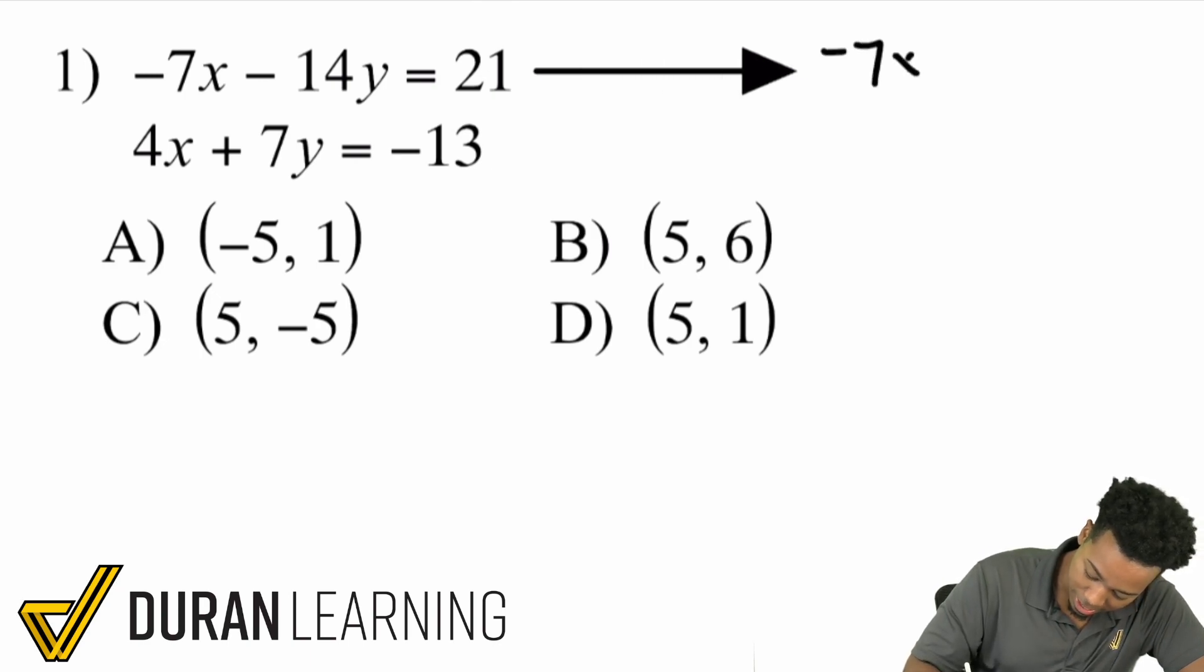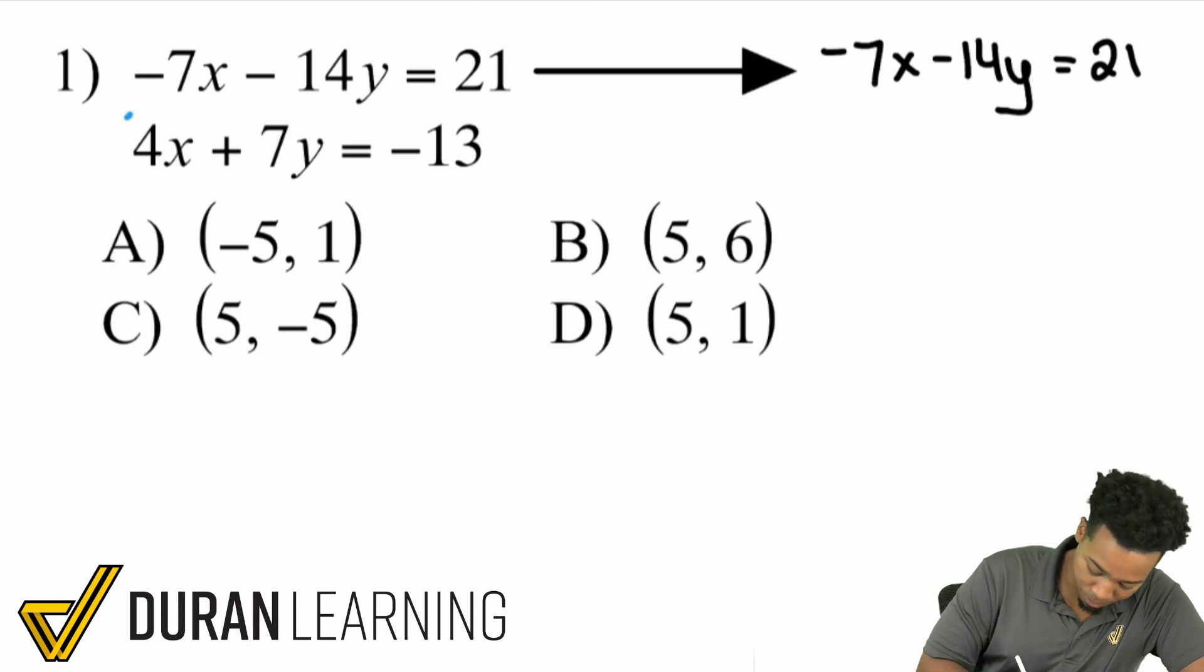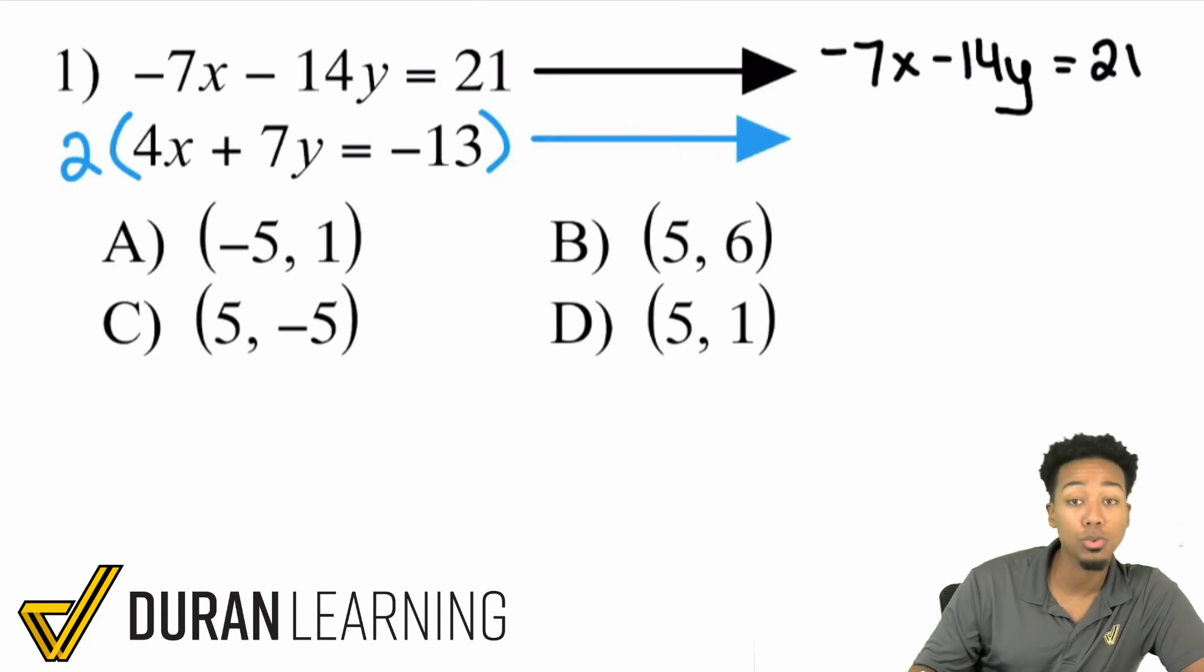I'm going to rewrite it the same exact way. Same exact way I'm rewriting it, but the second one, check this out, I'm going to multiply the entire equation by 2. When we multiply the entire equation by 2, here's what happens.